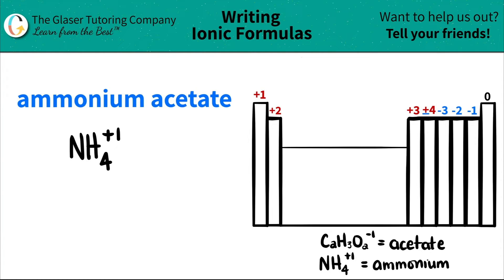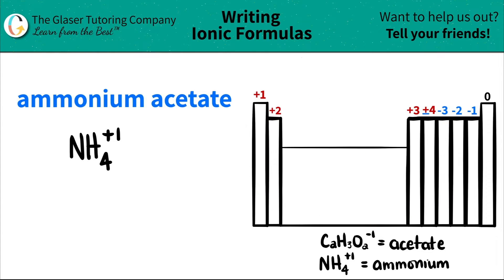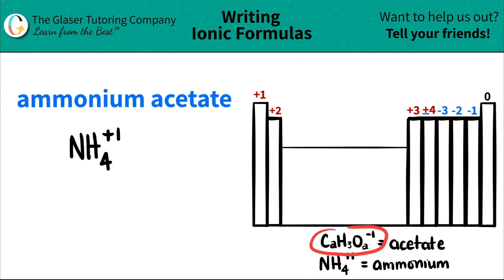I don't know what my dog is doing, but work through distractions — we got this. Next we have acetate. It has an ATE ending, and all ATE endings are polyatomics as well, which means they are not going to be on the periodic table. You have to memorize this one as well. Acetate can appear in many different forms, but in this case acetate is C2H3O2 with a negative one charge.